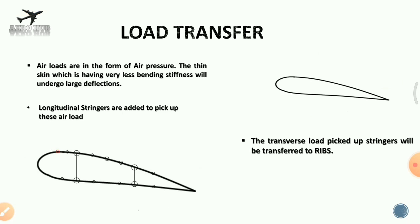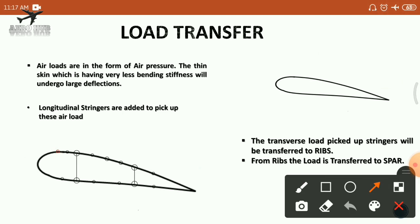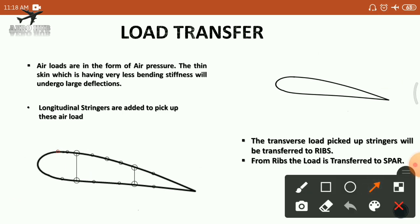Ribs have relatively high bending stiffness. From the ribs, the load is transferred to the spar of the wing section — specifically to the spar cap, which carries the bending load. After the load is carried by the spar cap, it is distributed to the spar web, where the load is carried as shear load. From the spar web, the load is then transferred downward to the lower spar cap.